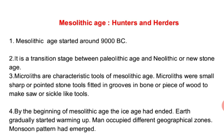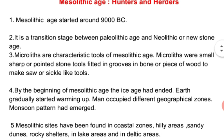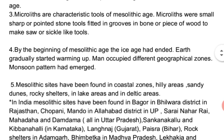The Mesolithic stage is a transition phase between the Paleolithic and Neolithic phases. The main characteristic of this phase is the microliths — small sharp or pointed stone tools fitted in grooves of bone or pieces of wood. The microliths were used to make saw or sickle-like tools.